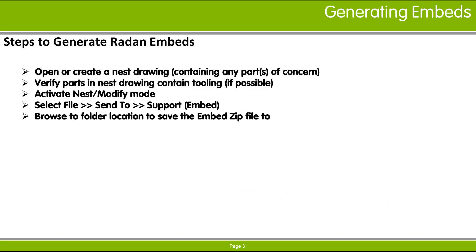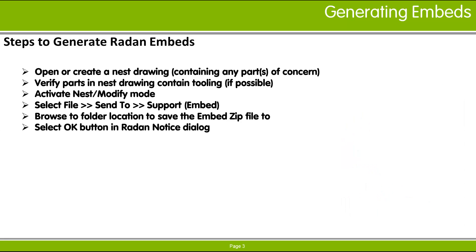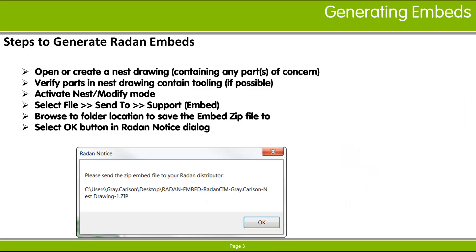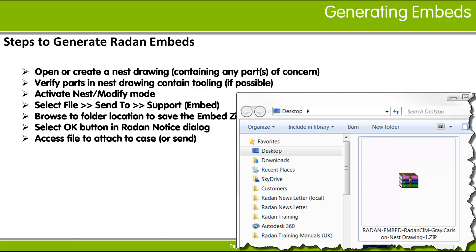You can then browse to the folder location for the embed file to be saved to. Selecting the OK button on the RAIDAN notice dialog completes the embed generation process. A final file access dialog will appear at the specified folder location.